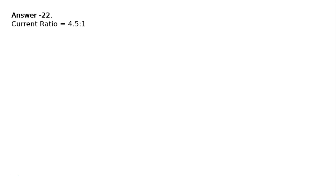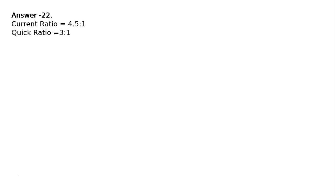If you write down all the information in one place, it will help you to solve the problem. Current ratio is equal to 4.5 to 1. Quick ratio is equal to 3 to 1. Inventory, or stock, or closing stock, is equal to ₹36,000. Let current liabilities be X.